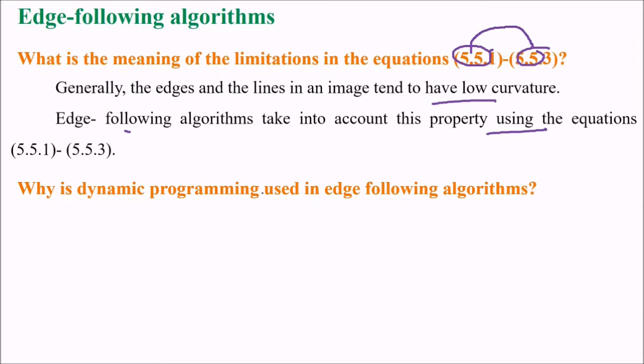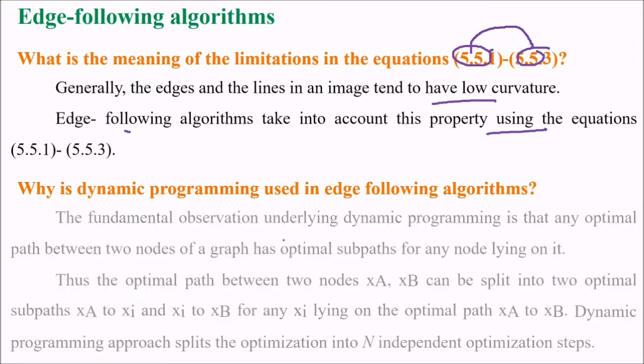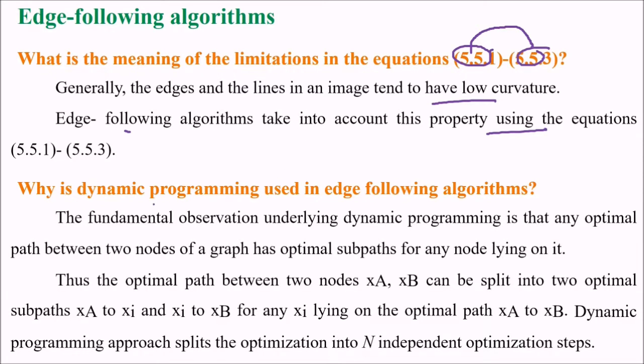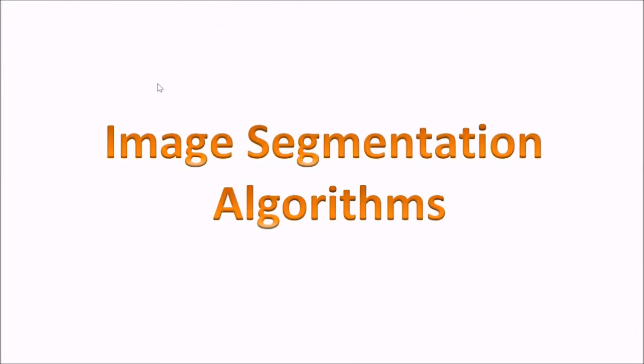Why is dynamic programming used in edge following algorithms? The fundamental observation underlying dynamic programming is that any optimal path between two nodes of a graph has optimal subpaths for any node lying on it. Thus the optimal path between two nodes can be spread into two optimal subpaths for xi lying in the optimal path between xa and xb. Dynamic programming approaches split the optimization into independent optimization steps.